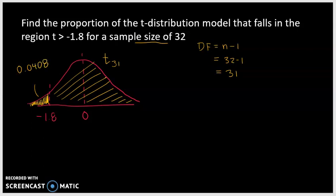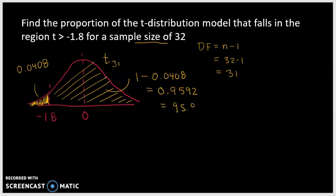But that's not what we want — we want the proportion that falls greater than negative 1.8. The area under the curve is 1, so what falls greater than negative 1.8 is 1 minus what falls less than negative 1.8, which is 0.0408. So that proportion equals 0.9592, or 95.92% of the t-distribution model falls greater than negative 1.8.